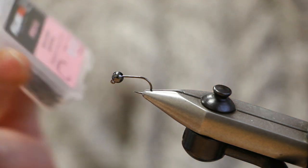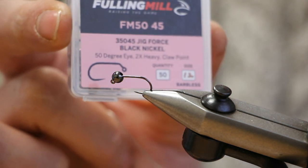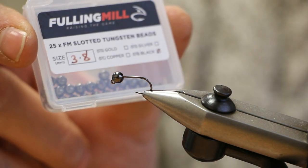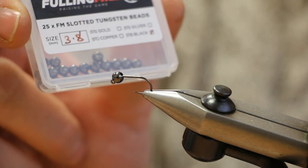The hook we're using is the fully milled jig force in a size 12 and it's got a 3.8mm black tungsten bead.